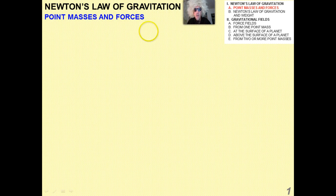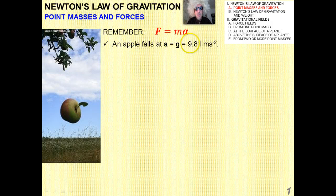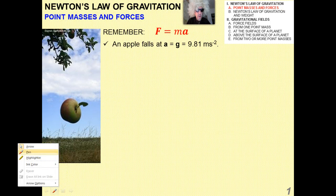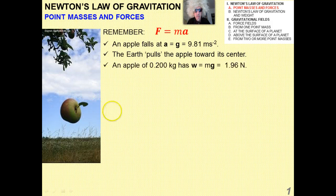The first thing we're going to talk about is this idea of point masses. Remember Newton's Second Law: F equals mA. An apple falls at a certain acceleration — 9.81 meters per second squared — on the surface of Earth. The Earth pulls the apple towards its center, so the apple falls what we perceive as being down towards the surface of the Earth.